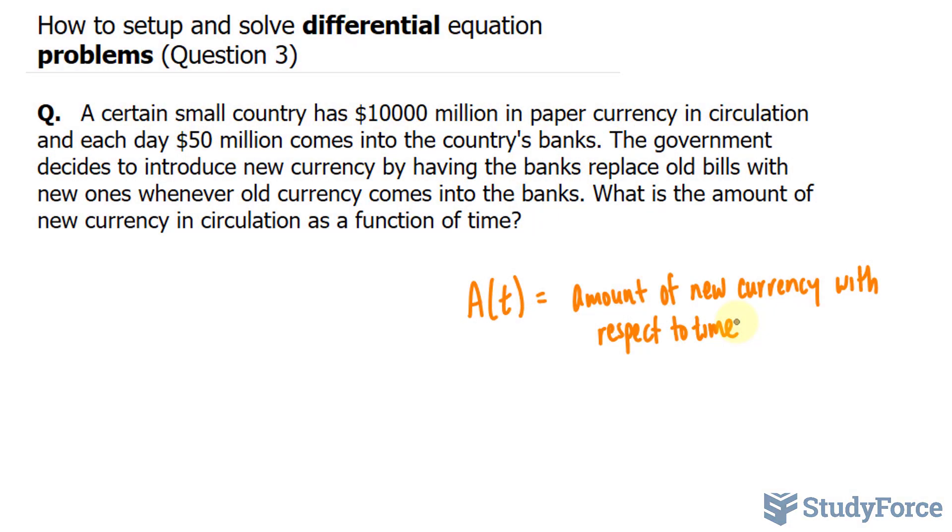Now that I've written that, I said I want my function to model what goes in minus what goes out. Now since we're looking for the rate of change, I'm not going to use A(t). Instead, I'll use A prime or simply, since we're doing differential equations here, dA over dt.